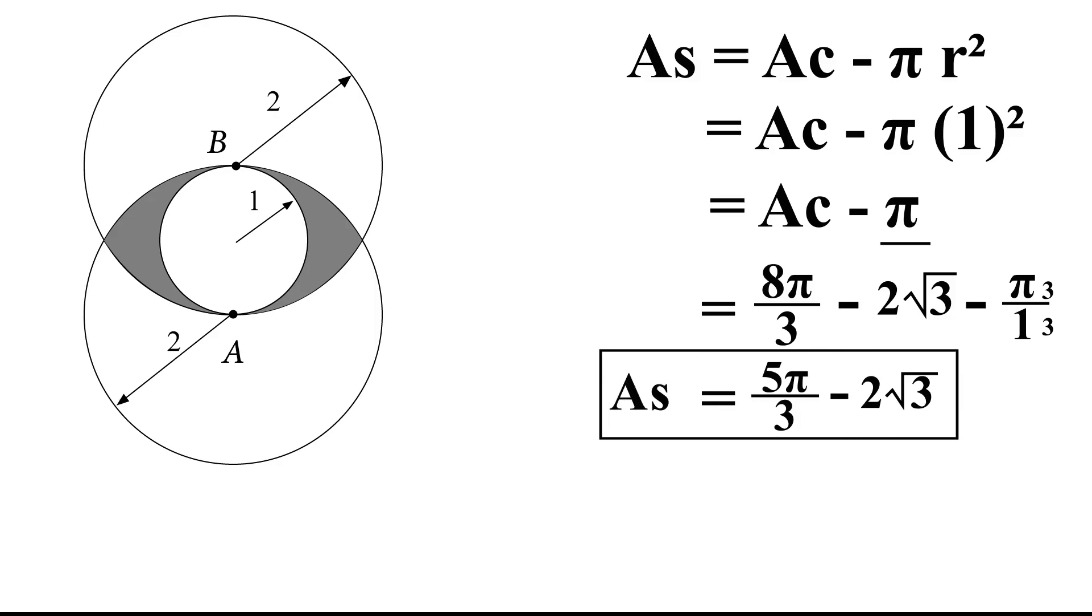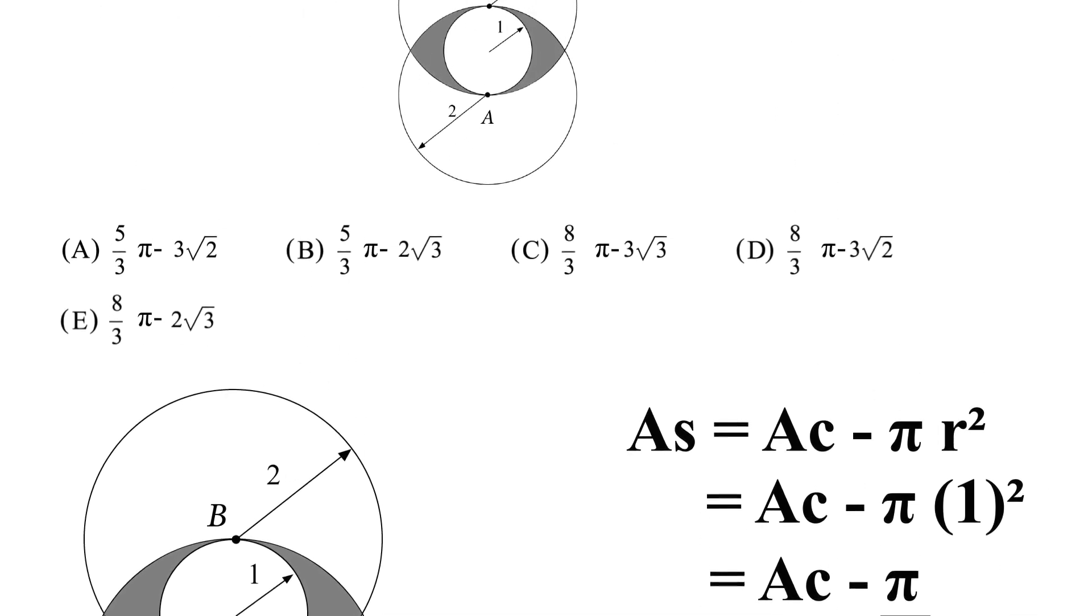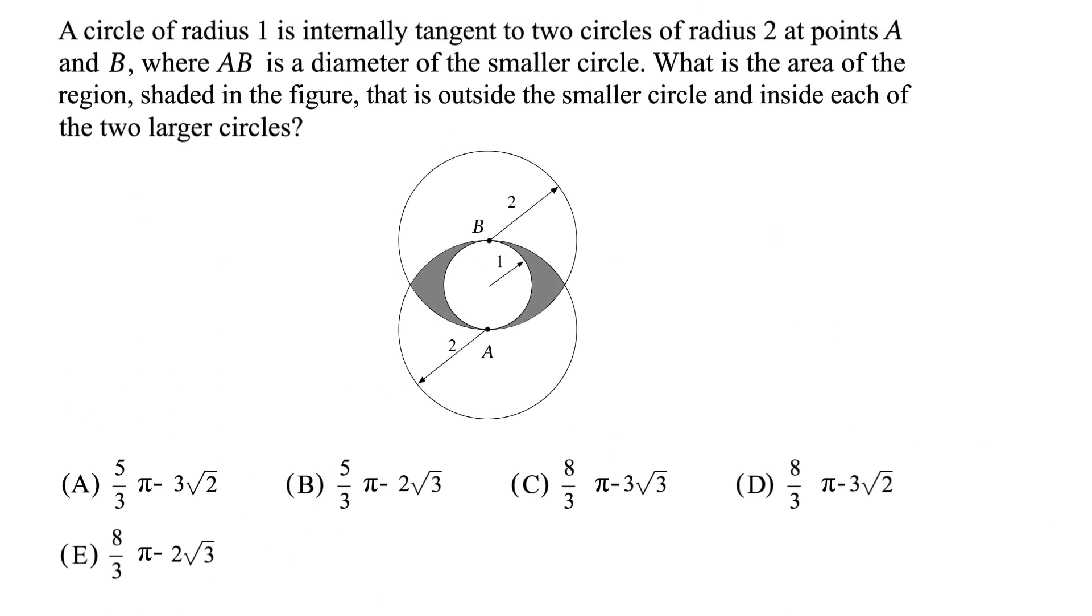That is the area of the shaded region. And let's see the answer choices. 5π divided by 3 minus 2√3 for number 25 is answer choice.